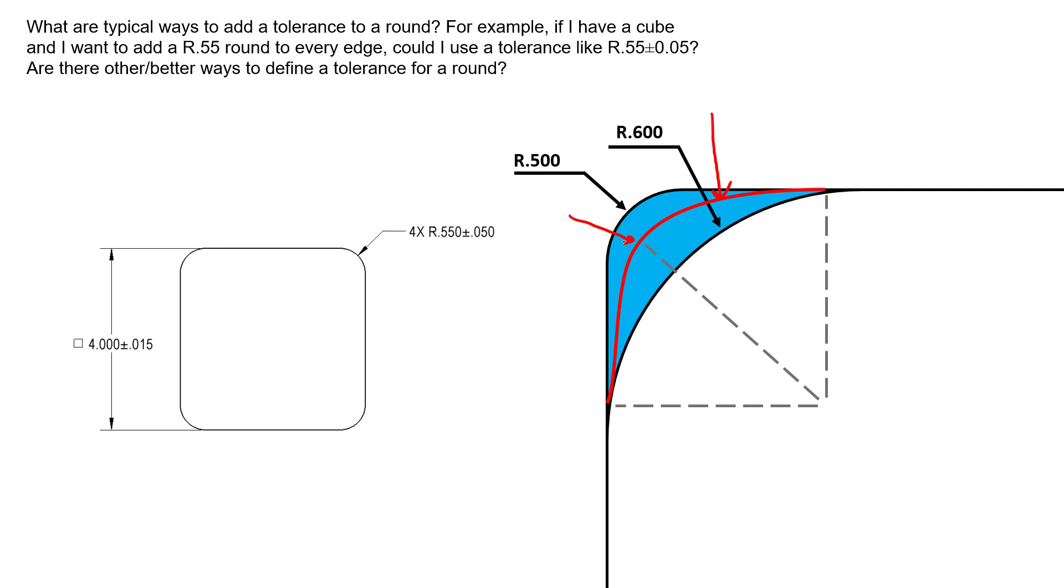But collectively, if we average them out, we might have a pretty decent radius. So physically measuring the radii is a difficult thing to define. It's not like a cylinder where we can define the size using an envelope. And the hard fact of reality is that it will always be difficult to inspect and it will always be ambiguous as to how you define what size that radius is and whether or not it's within your limits.